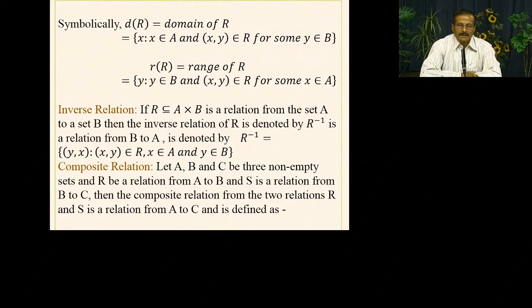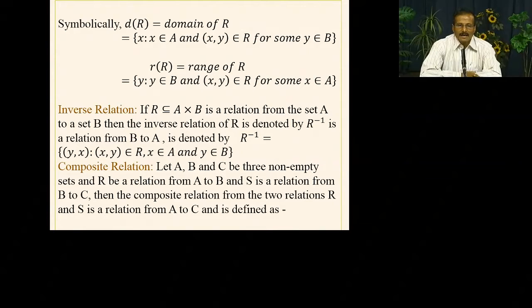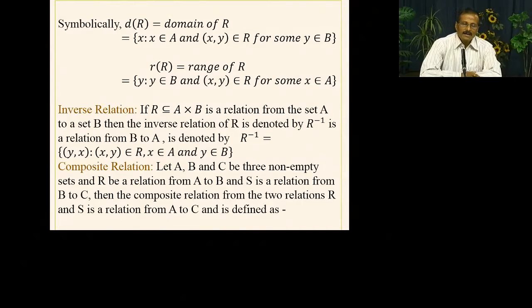The range of R is written as small r, which is the collection of images that R relates to x — that is, the second coordinates of the ordered pairs. We write: range of R = {y : y ∈ B and (x, y) ∈ R for some x ∈ A}. Additionally, R has an inverse. If R is a subset of A×B defined on non-empty sets A and B, then R-inverse is defined as {(y, x) : (x, y) ∈ R}, where x ∈ A and y ∈ B. So R-inverse relates B to A.